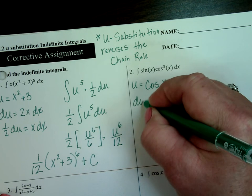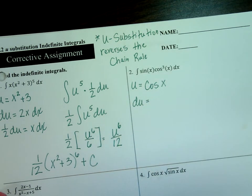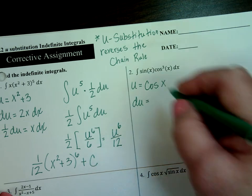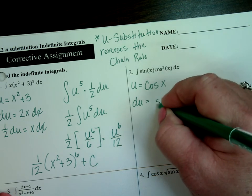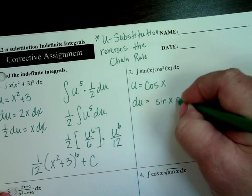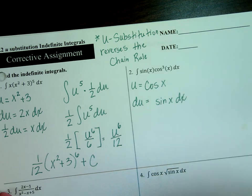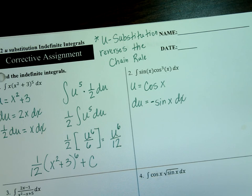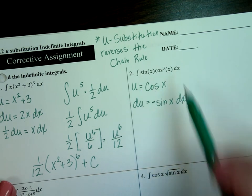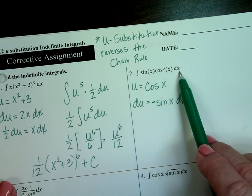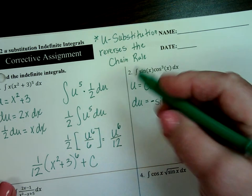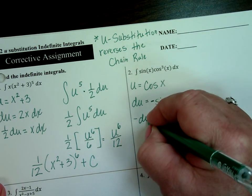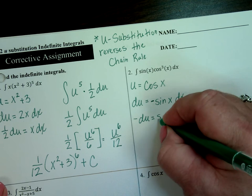Before I make my substitutions, what's du? What's the derivative of cosine? It is negative sine, Abby says — she's right. Looking at my substitution, I have a sine of x and a dx, but I don't have the negative. He's going to flip to the other side, so negative du equals sine of x dx.